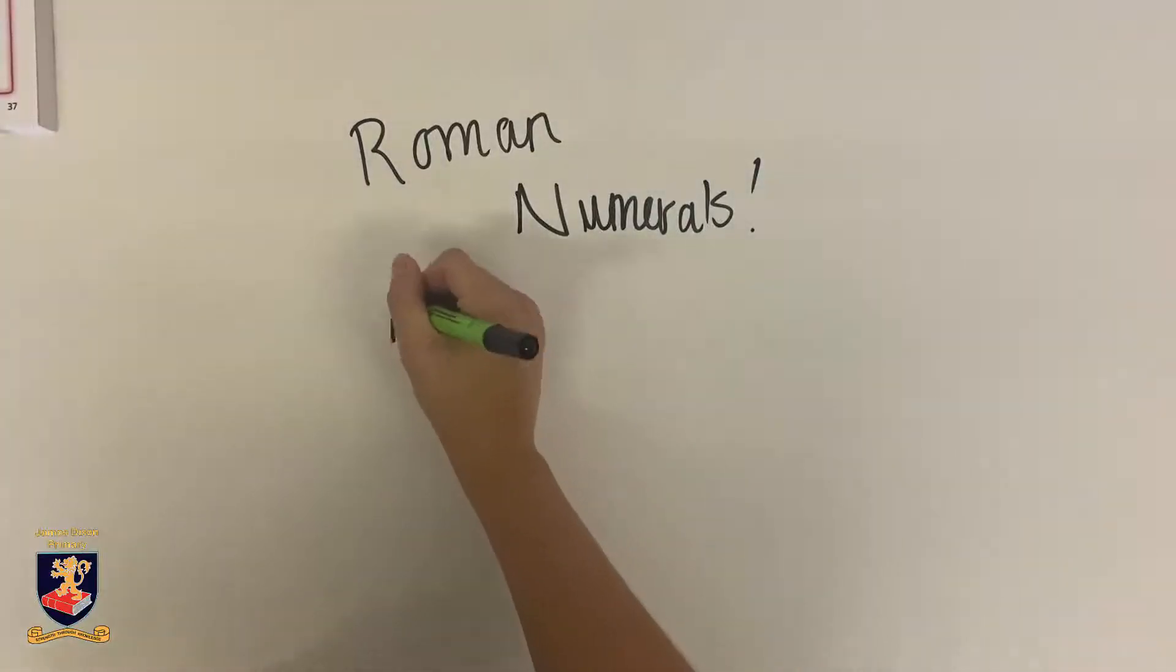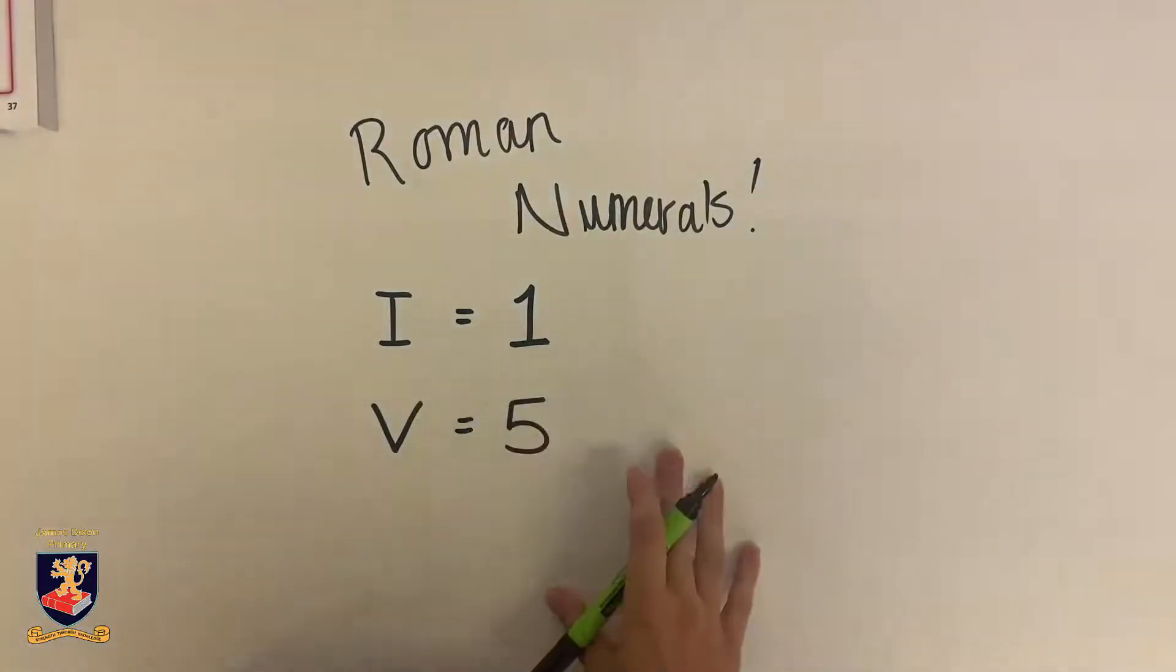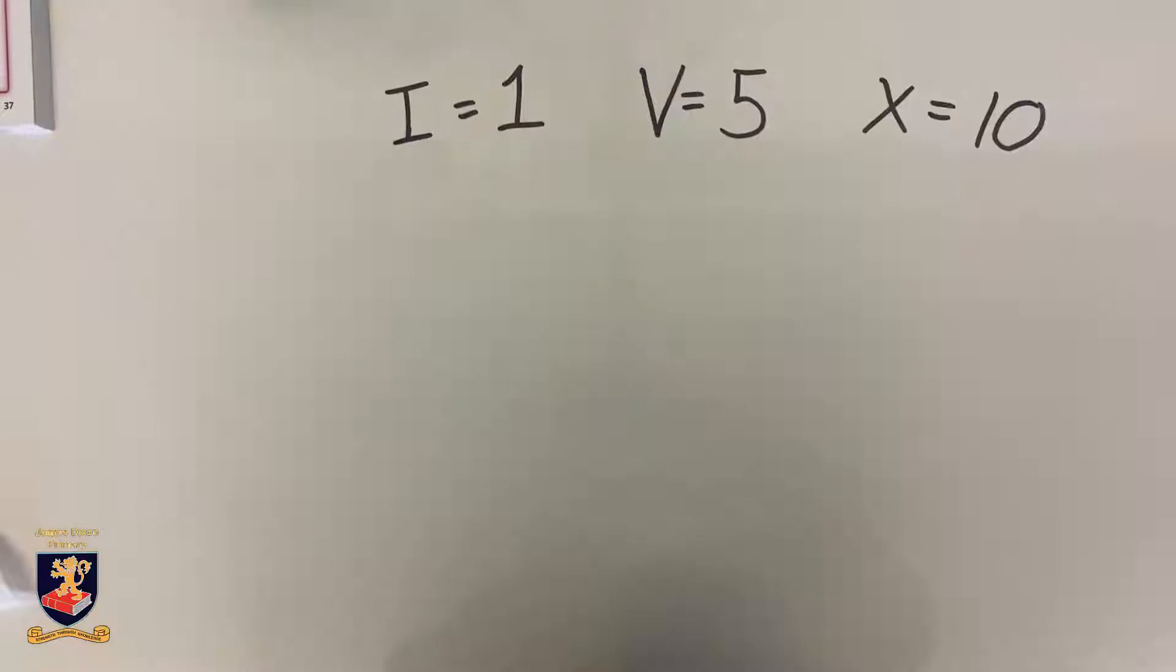In Roman numerals, the letter I represents one, the letter V represents five, and the letter X represents ten.